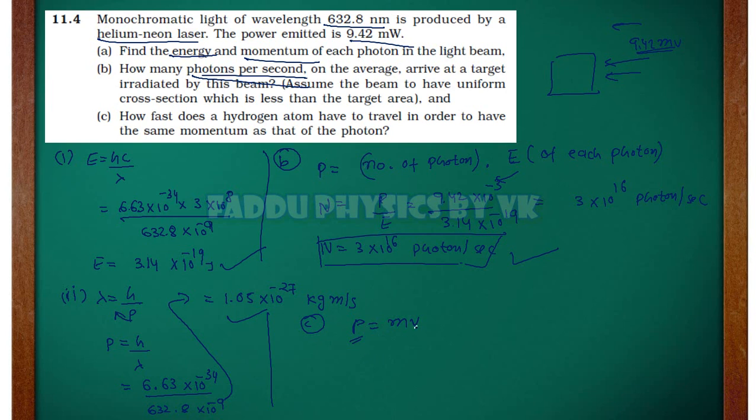How much momentum of photon? V should be taken out. V is equal to P by M. P value of 1.05 into 10 to the power minus 27 divide by 1.67 into 10 to the power minus 27. This will be 0.63 meter per second. This is your answer.